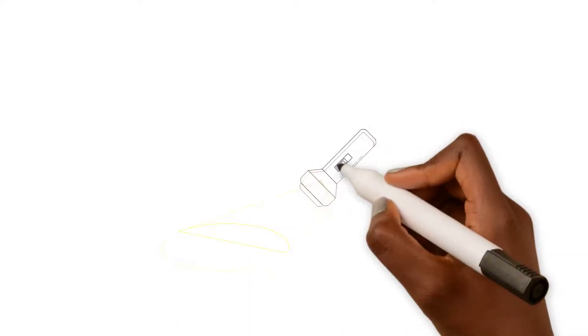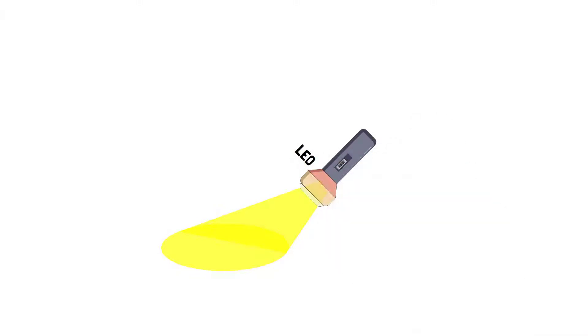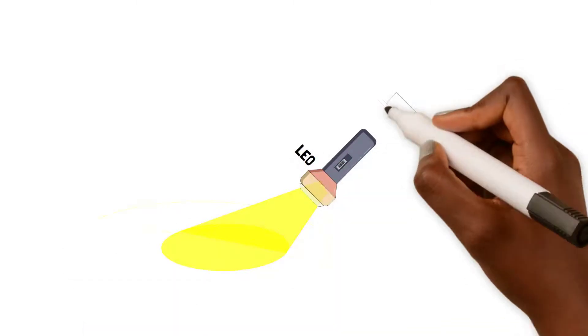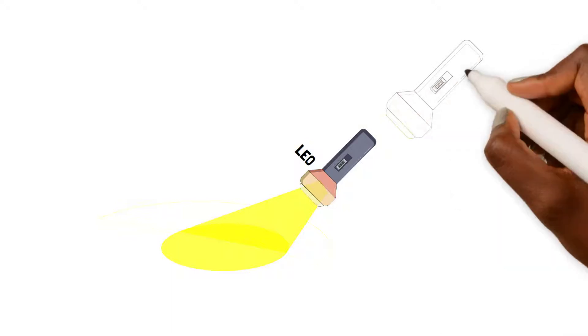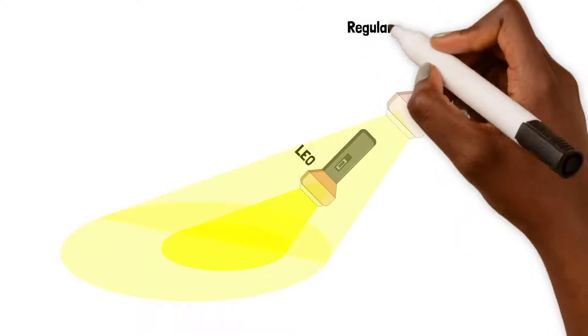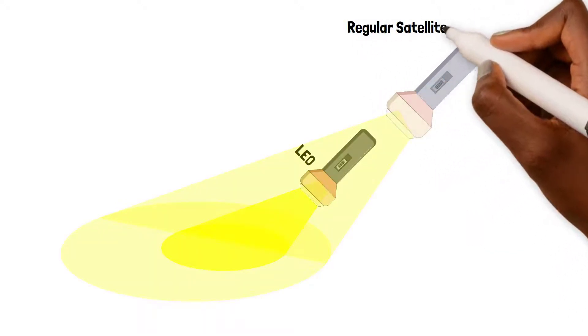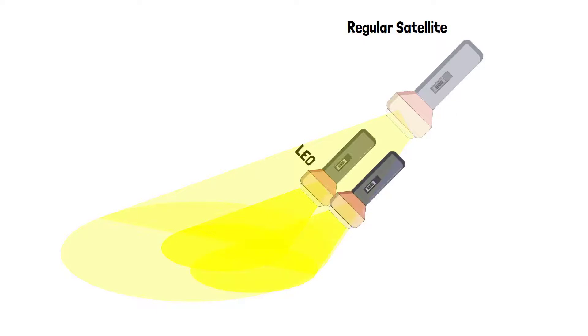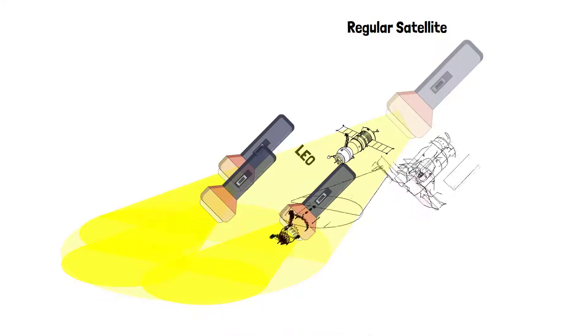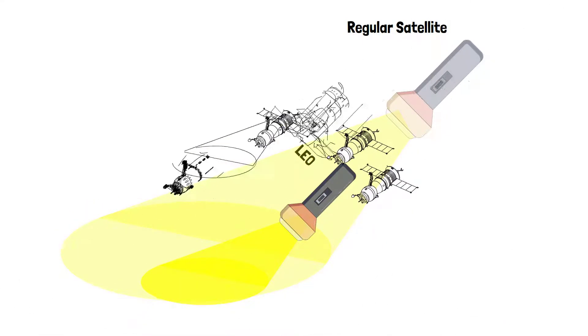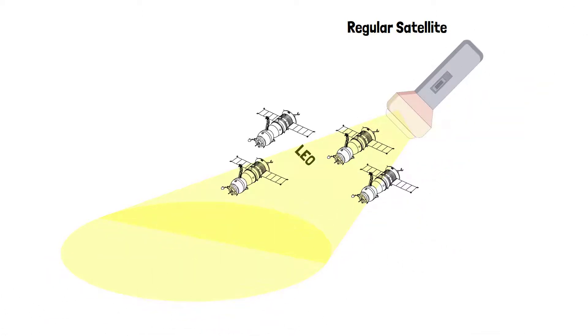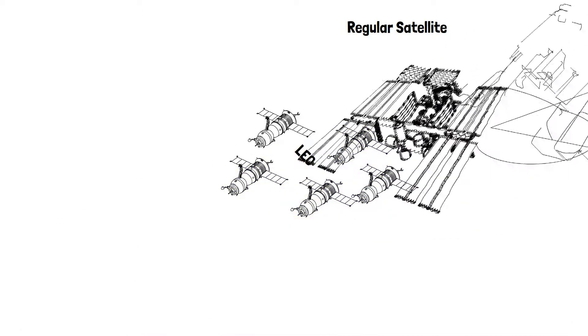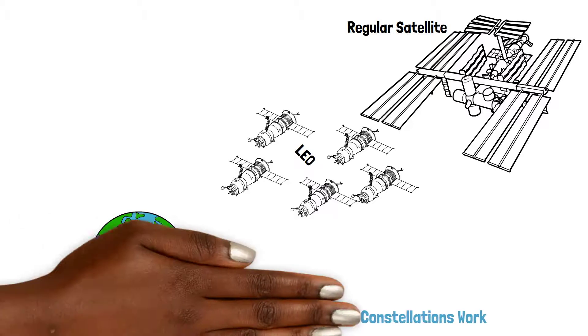Think about it like the difference between the beam of a torch light that's close to the ground and the beam of one that's farther away. To cover the same expanse on the ground, you typically need several torch lights close to the ground to do the job of one that's farther away. In a similar vein, you'd need thousands of smaller LEO satellites to work together and operate effectively as one traditional satellite would. That's how LEO satellite constellations work.